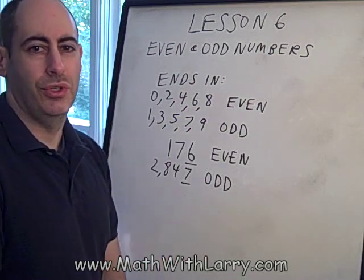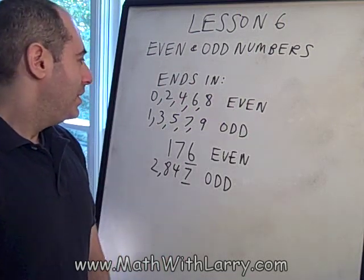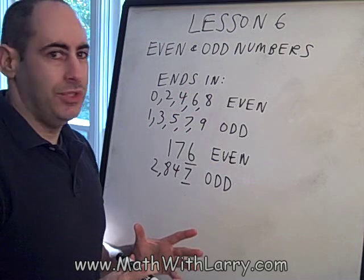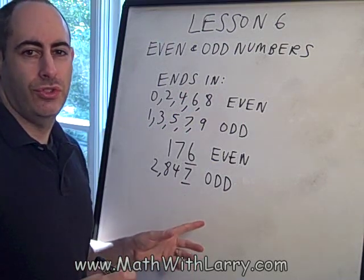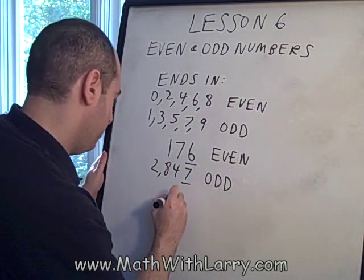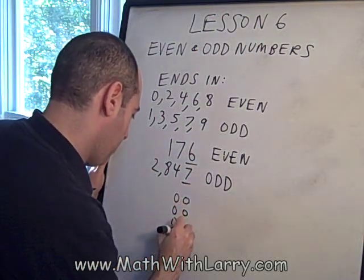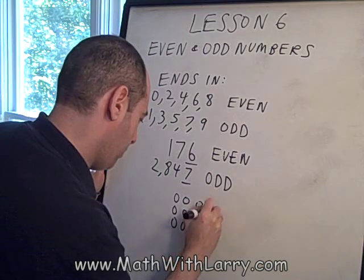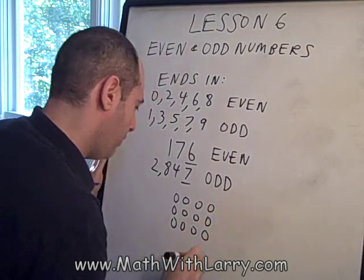Now, let's see what even and odd is really all about. Let's think about 12 objects. I'm going to go ahead and draw 12 circles. Now, I know that 12 is an even number, because it ends with a 2.